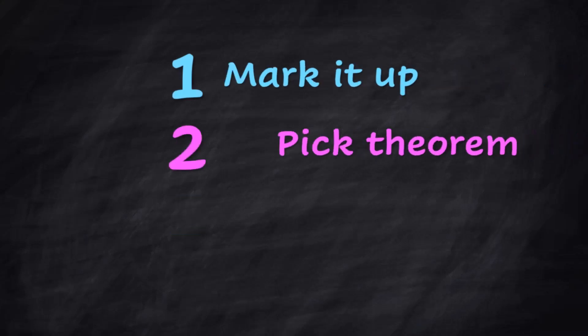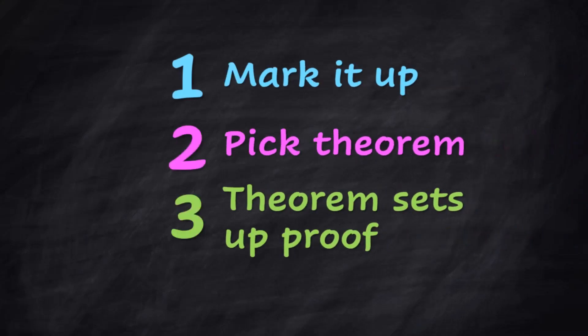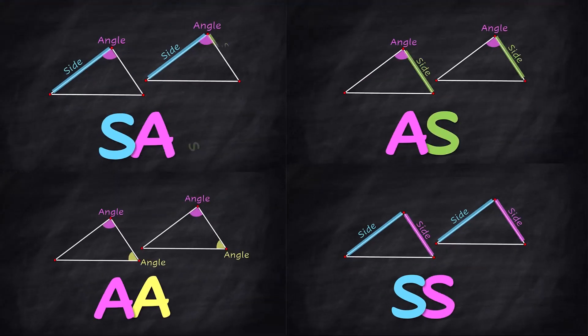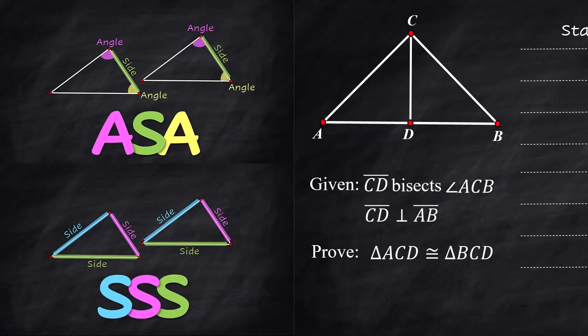Triangle proofs in three simple steps: mark it up, pick your theorem — the theorem will help you set up your proof. Let's do proofs together right now, step by step, and I'll review the theorems as we need them.